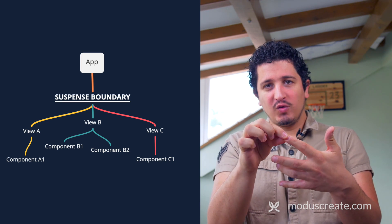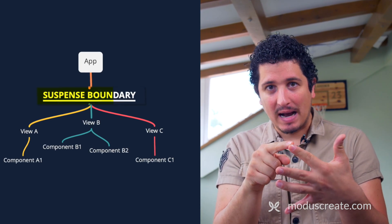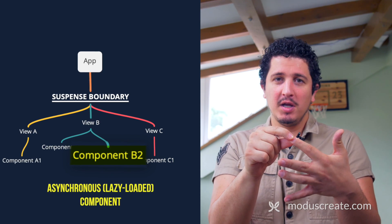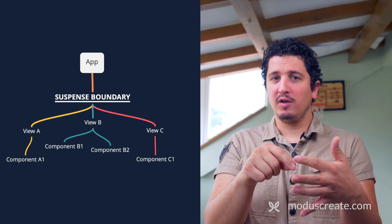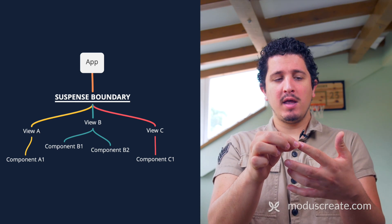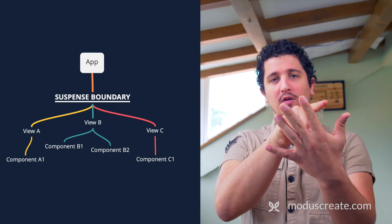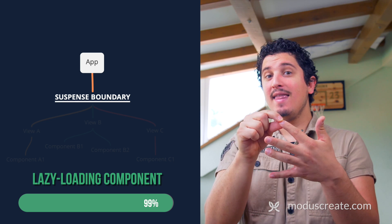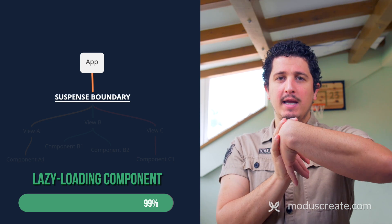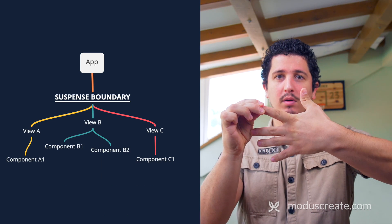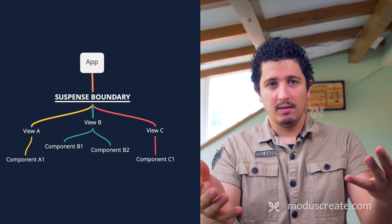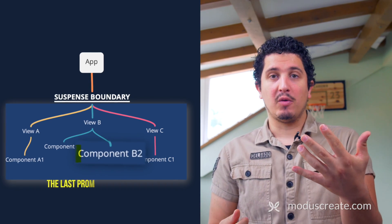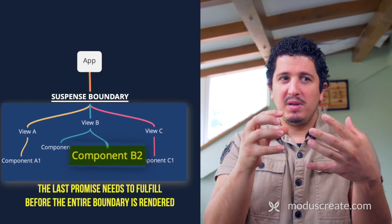Let's say I need to grow a nail — that's my asynchronously loaded content. If my whole hand is a Suspense boundary, then loading the fingernail is going to be a promise. When the fingernail is sufficiently grown and loaded, then it needs to show the content. Nothing is going to be loaded in one Suspense boundary until every piece of it has been loaded.